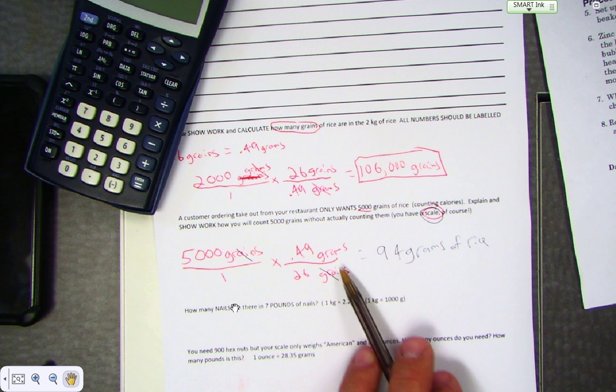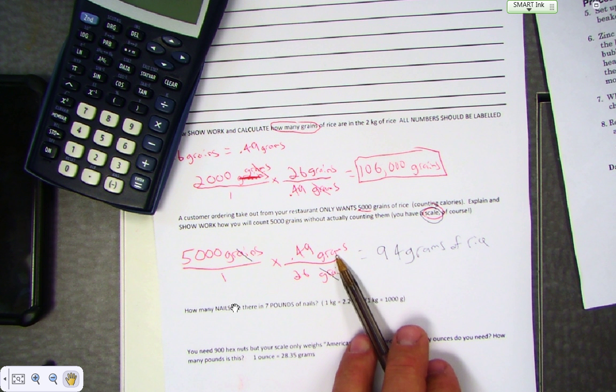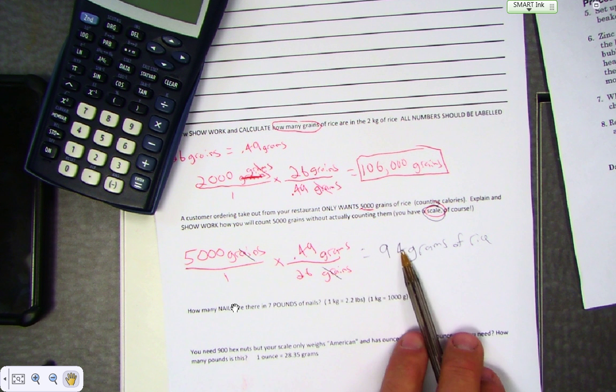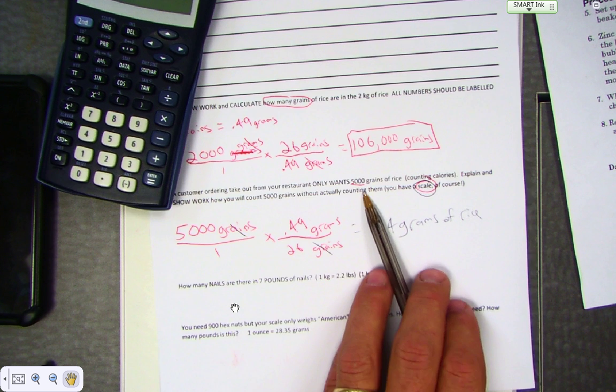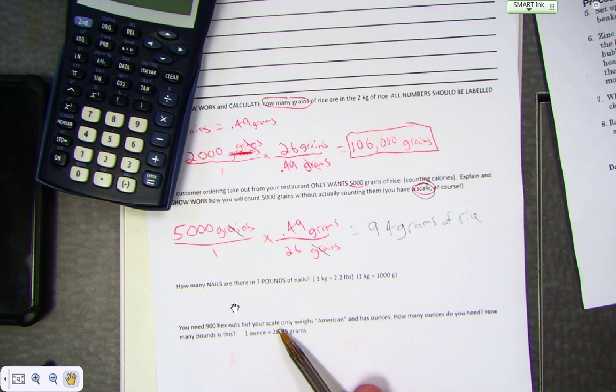I need grams. When I put that into the calculator, it's 94 grams of rice equals 5,000 grains. These next two are related to the activity we did the other day.